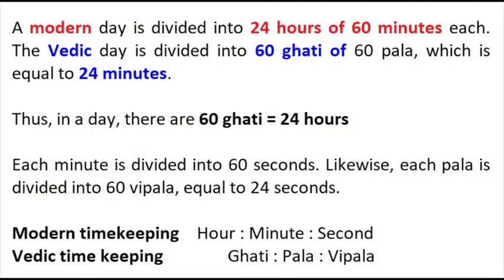The Hindu units of time: a modern day is divided into 24 hours of 60 minutes each. The Vedic day is divided into 60 ghati of 60 pala, which is equal to 24 minutes each. Thus in a day there are 60 ghati equals 24 hours.